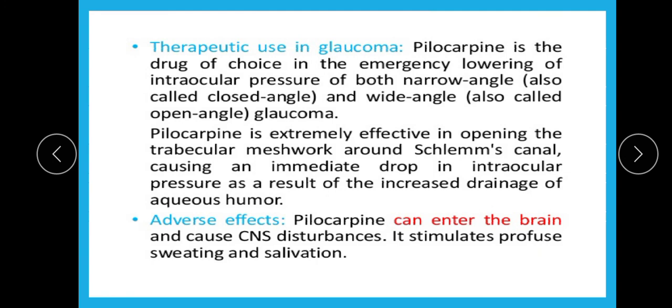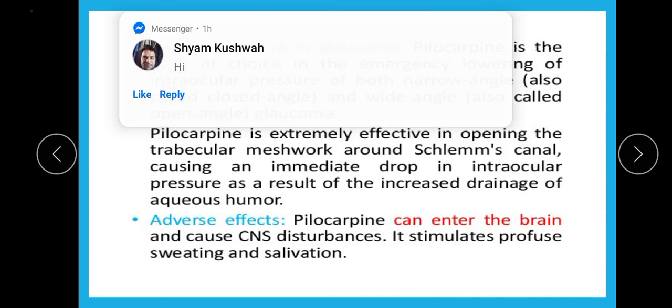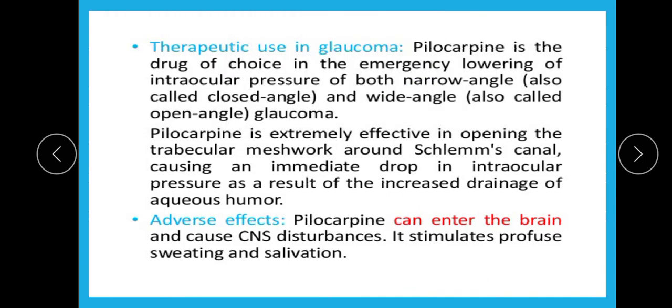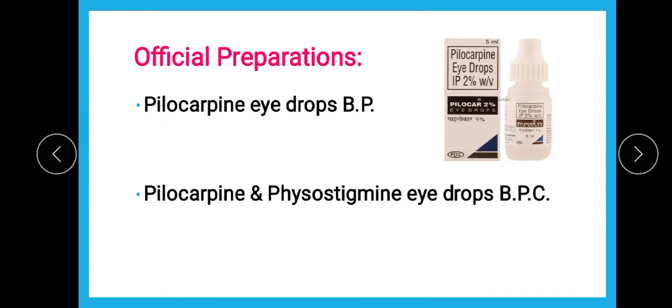Pilocarpine is used in glaucoma — both narrow angle (closed angle) glaucoma as well as wide angle (open angle) glaucoma. The adverse effect is that since it has the capacity to enter the brain, it can cause CNS disturbances. The key things to remember are: its use in ophthalmology and that it is an imidazole alkaloid. The official preparation is eye drops, as it is used in ophthalmology.